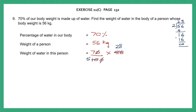So in the numerator, now we have 7 into 28, and in the denominator we have 5. There's nothing else we can cancel. So I'm going to carry on with my multiplication of 28 into 7. 7 8s are 56, carry 5. 7 2s are 14 plus 5 is 19. So in the numerator, we have 196.